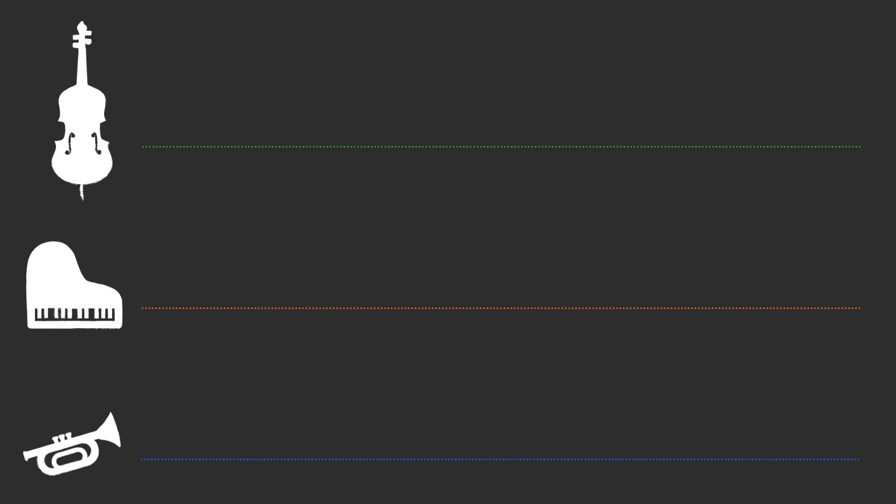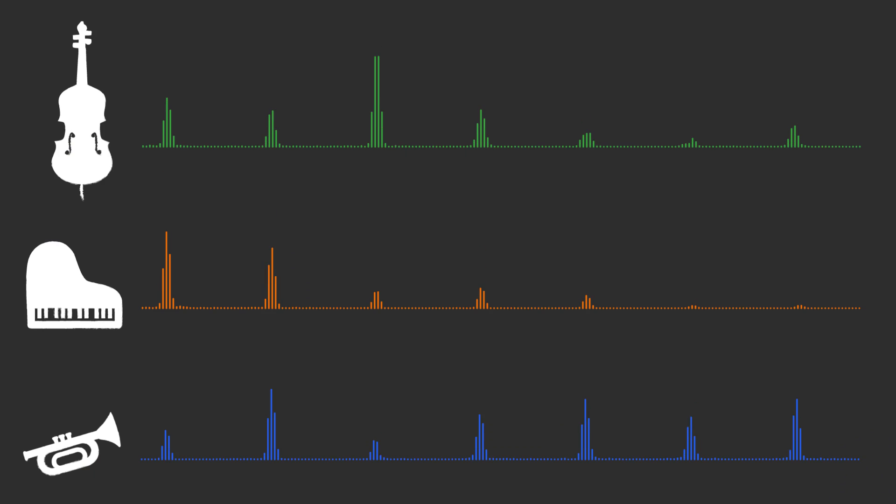It sounds fuller and richer, and like every note is a chord. And those are just the ones we can hear easily. If we graph the frequency spectrums for the cello, piano, and trumpet, we can see that there are a lot more.